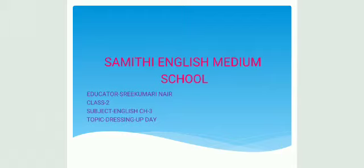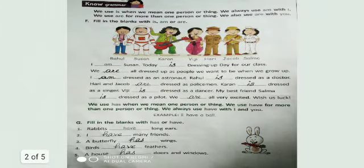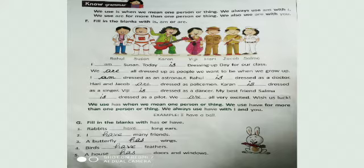Fill in the blanks with has or have. We use has when we mean one person, animal, place or thing. We use have for more than one person, animal, place or thing. We always use have with I, they, you and we. That means we use has with a singular subject and have with plural subjects.